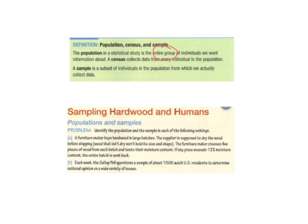If I'm collecting data regarding a population, a census means you have collected data from every single person in that population. So a census of college sophomores in the United States would mean you talked to every single college sophomore. Logistically, that's almost impossible, so what we do is we take samples.